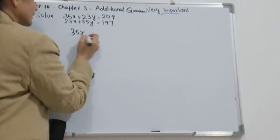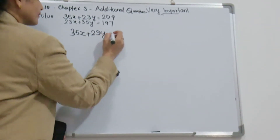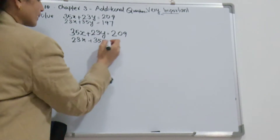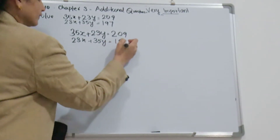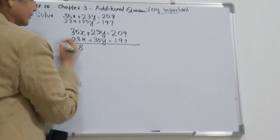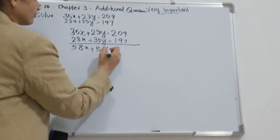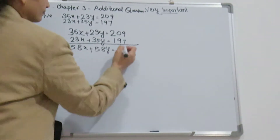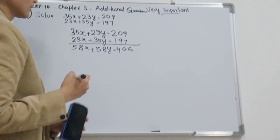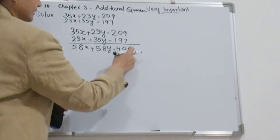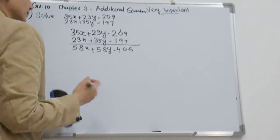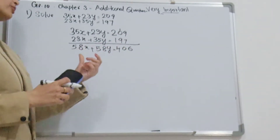When you add 35x plus 23y equal to 209 and 23x plus 35y equal to 197, you will get 58x plus 58y equal to 406.